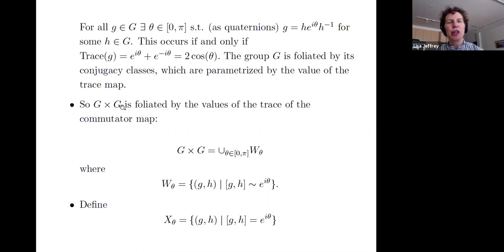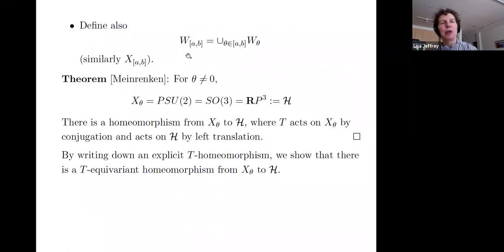The group SU(2) is foliated by its conjugacy classes, which are parameterized by the values of this trace map. So g cross g is foliated by values of the trace of the commutator map. So we'll write these level sets as W_theta. W_theta just means that the commutator is conjugate to e to the i theta. And x_theta means that the commutator is equal to e to the i theta. Let me also denote W of an interval, meaning the union of the level sets where theta runs from the closed interval a to b. And similarly for x.